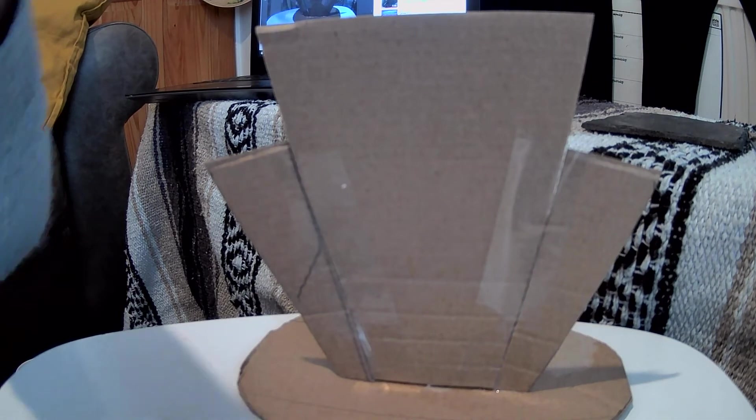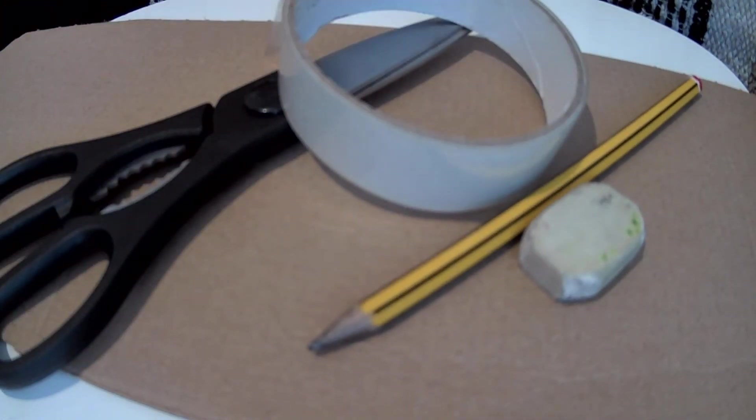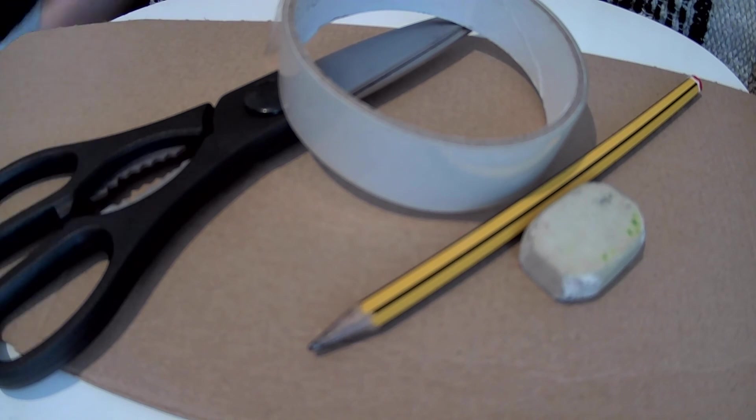So, first things first, we need to make sure that you've got a piece of cardboard, preferably A4 size, an eraser, a pencil, some scissors, some tape or glue, or whatever you've got to put your materials together. Also, if you haven't got cardboard, you can use card or paper, and a ruler.